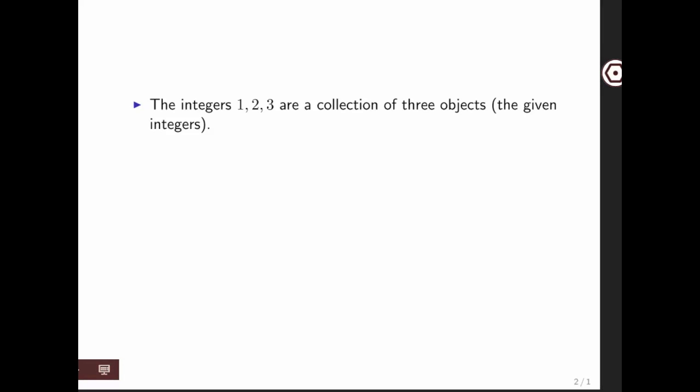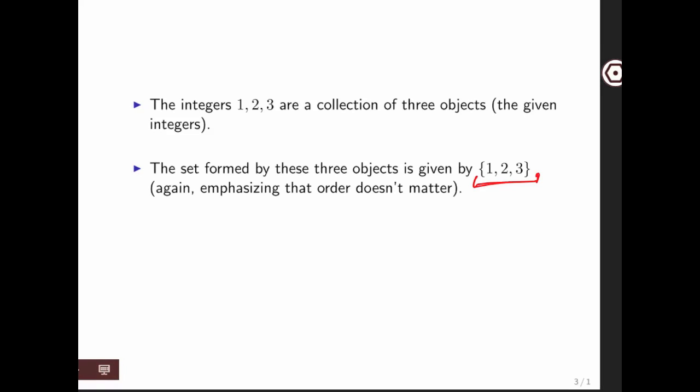Integers 1, 2, and 3 are a collection of three objects, namely those integers. The set formed by these three objects could be denoted like that. And again, order doesn't matter. So the size of this set then would be 3, because there are three distinct objects in it.